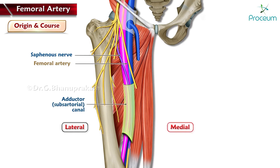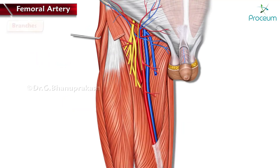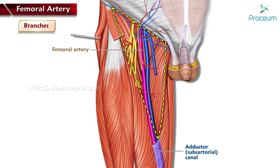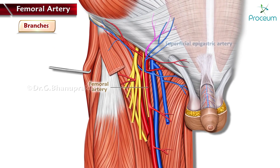The saphenous nerve is initially found lateral to the femoral artery, then anterior, and then medial as it travels through the canal. The femoral artery gives off five branches in the femoral triangle and one in the adductor canal, giving six in total. The first branch is the superficial epigastric artery; after its origin, it ascends superomedially towards the umbilicus within the abdominal superficial fascia.